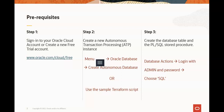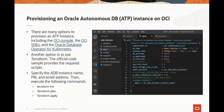The second step is to create an Oracle Autonomous Database instance. There are many options you can use to achieve that. We'll use the sample Terraform scripts. Specify the ADB instance name, password, and email address. Then execute the following commands: Terraform init, Terraform plan, and Terraform apply.